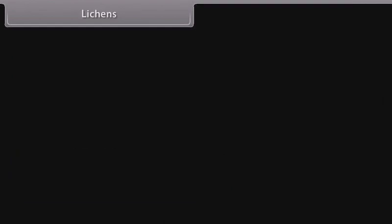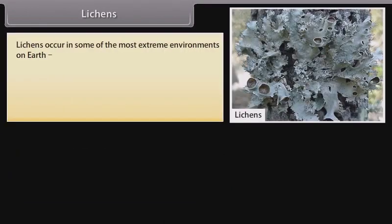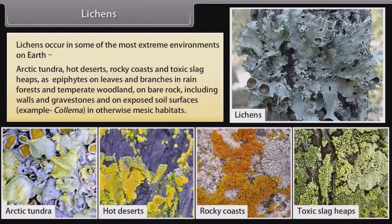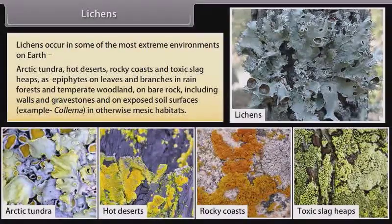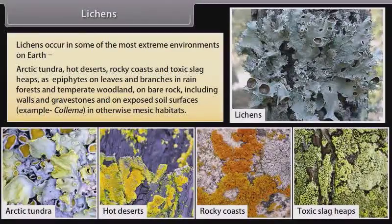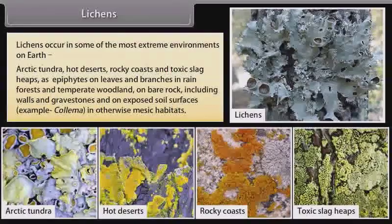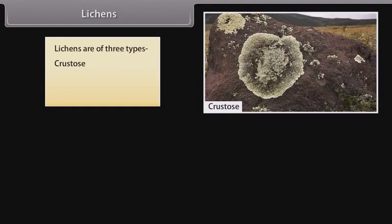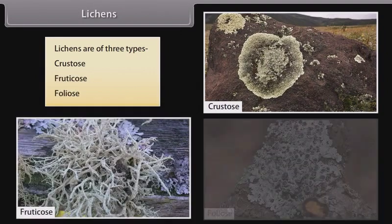Lichens occur in some of the most extreme environments on Earth: Arctic tundra, hot deserts, rocky coasts, and toxic slag heaps, as epiphytes on leaves and branches in rainforests and temperate woodland, on bare rock including walls and gravestones, and on exposed soil surfaces. Lichens are of three types: Crustose, Fruticose, and Foliose.